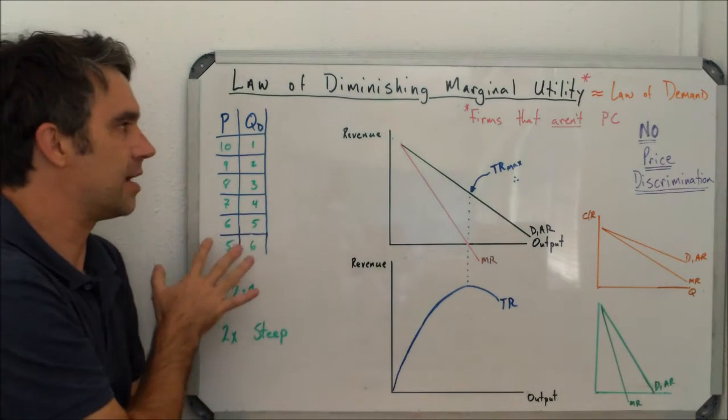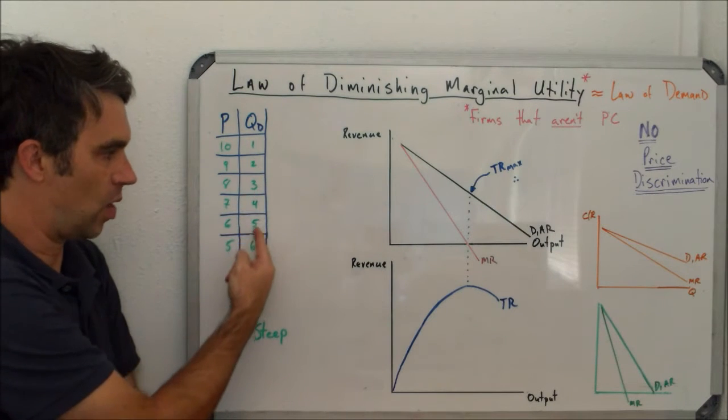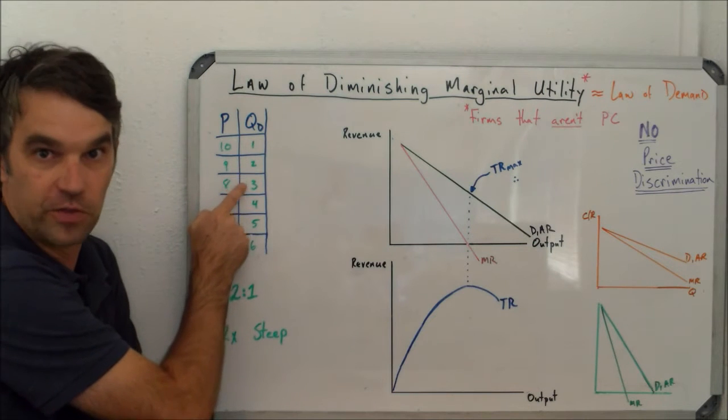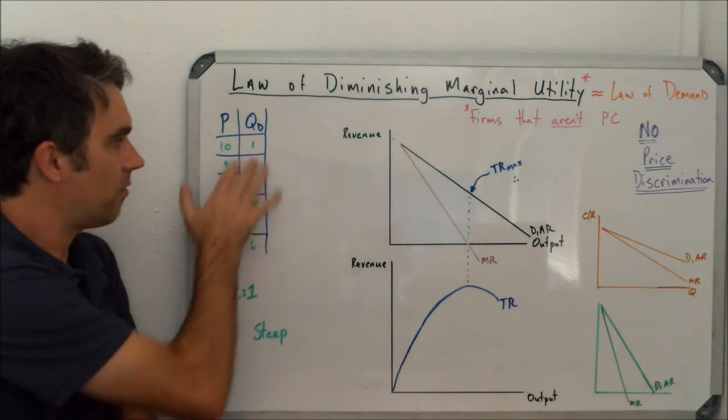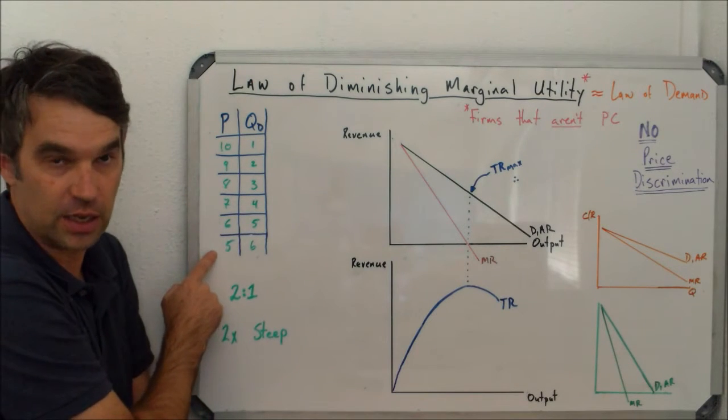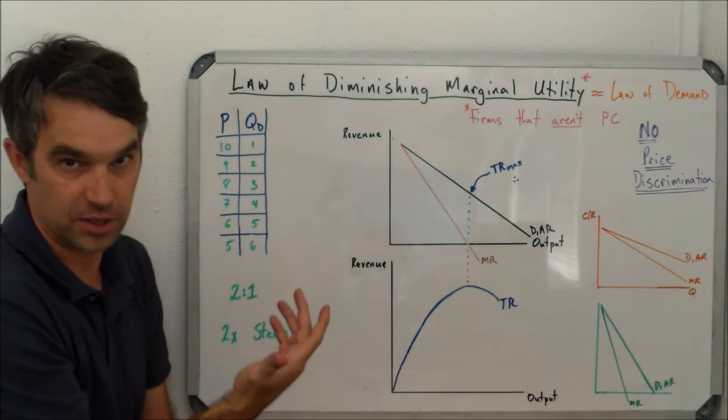So again, we see that in a demand schedule that for higher and higher quantities to be demanded, and this would be one, then the second, then the third, then the fourth, and the fifth, for that to occur, because the marginal utility is decreasing, the price would also have to decrease.